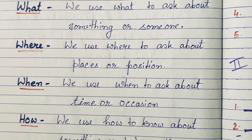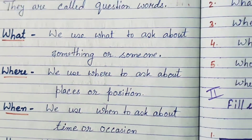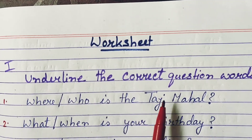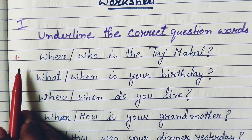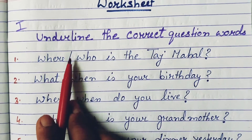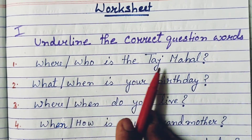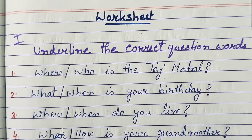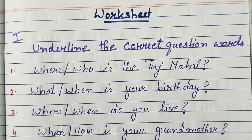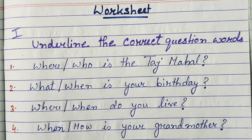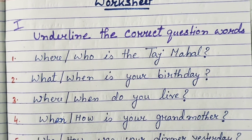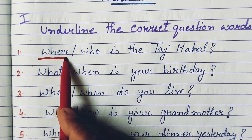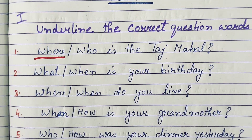So let us do Worksheet 1. Underline the correct question words. Number 1: 'Where / Who is the Taj Mahal?' Here we are talking about a place — the Taj Mahal. When we ask about any place or position, we use 'where.' So the correct answer is: 'Where is the Taj Mahal?'